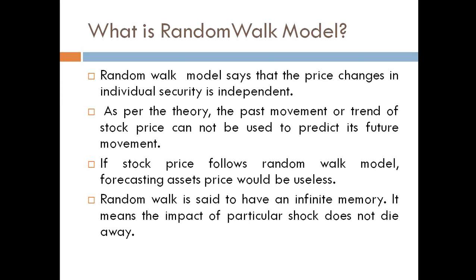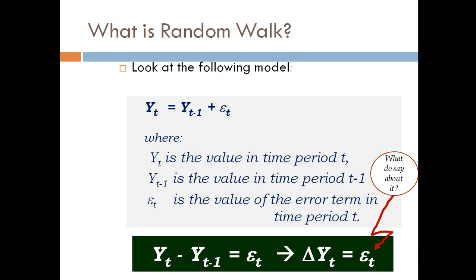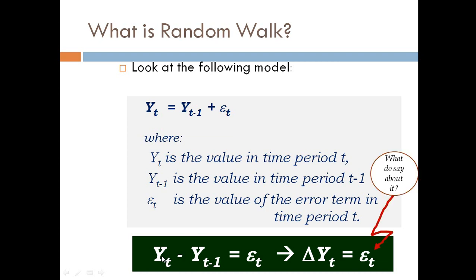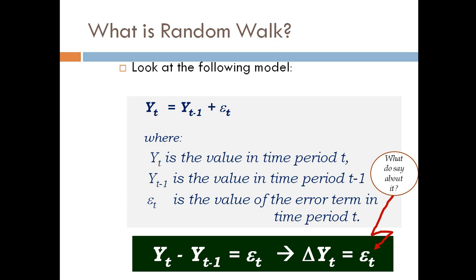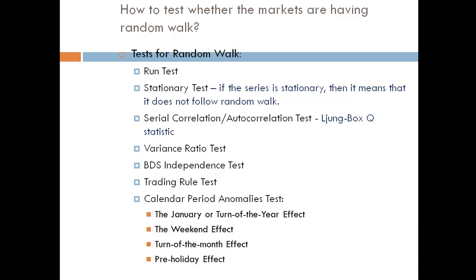If any security market follows the random walk model, it means technical analysts or fundamental analysts cannot be capable of generating abnormal returns. To understand this: yt is today's price, yt-minus-1 is yesterday's price, plus an error term. If we make a difference between today's price and yesterday's stock price, it becomes the error term, also known as the change in price. This change in price or error term has to be independent if any stock price follows the random walk model.